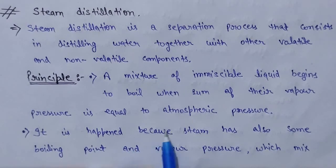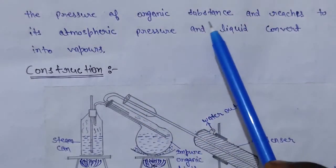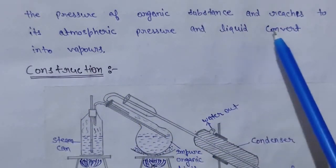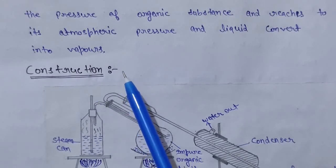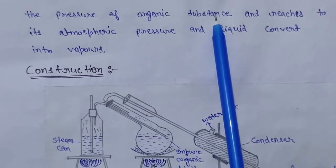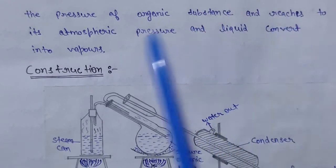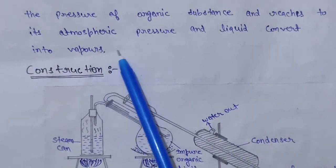It is happened because steam has also some boiling point and vapor pressure which mixes the pressure of organic substance and reaches to atmospheric pressure, and the liquid converts into vapors. So what happens in this? The steam is providing some boiling point and the vapor pressure. The organic substance will also have a boiling point, so the liquid is converted into vapors.